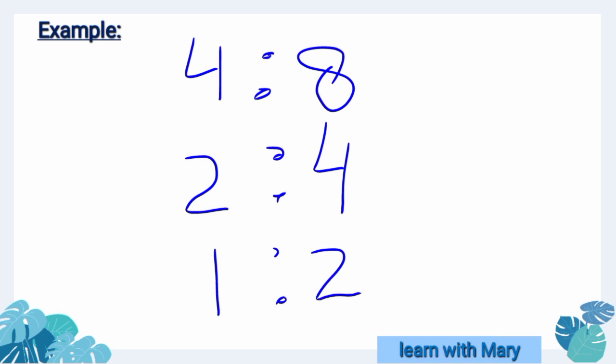Let's have some examples. If we write 4 ratio 8, its simple form is 1 by 2. The common ratio of these numbers is 1 by 2. This is a rational number.